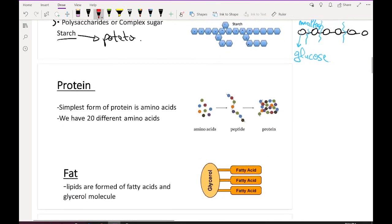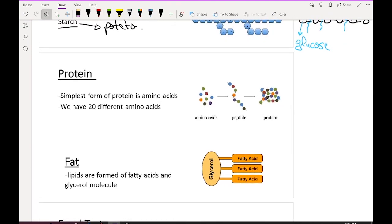Moving to protein. The simplest form of protein is amino acid. After digestion, complex protein breaks down to its last and simplest form: amino acid. We have 20 different amino acids, but we need to know that amino acids, once linked into a chain, form peptides.